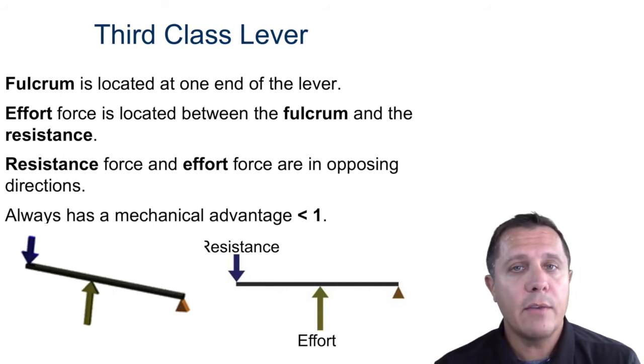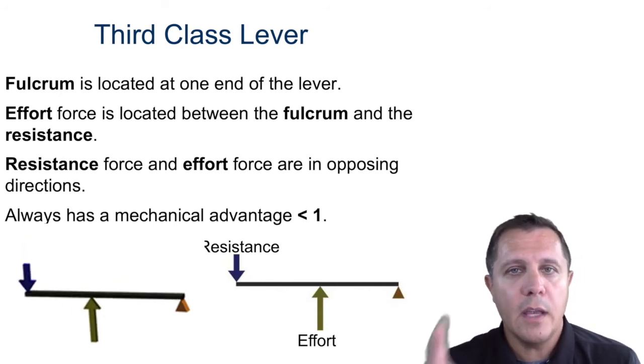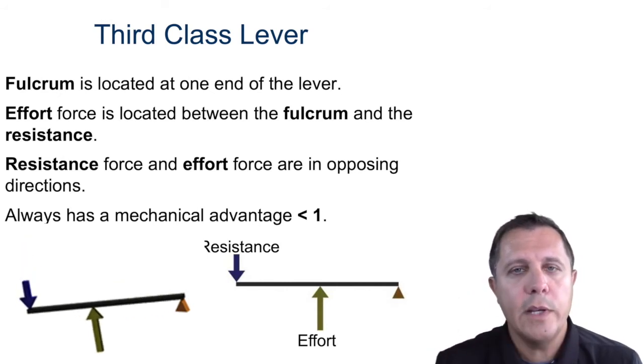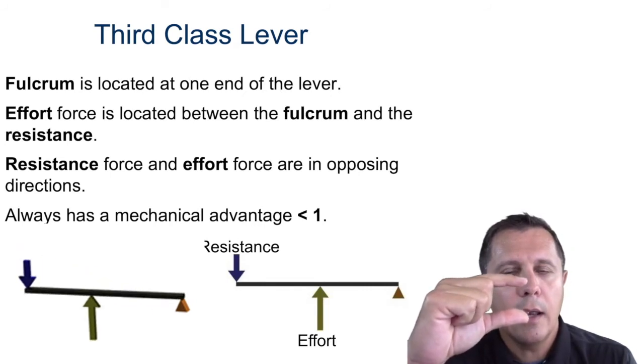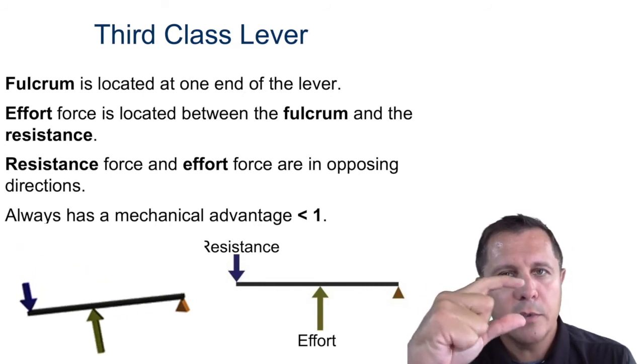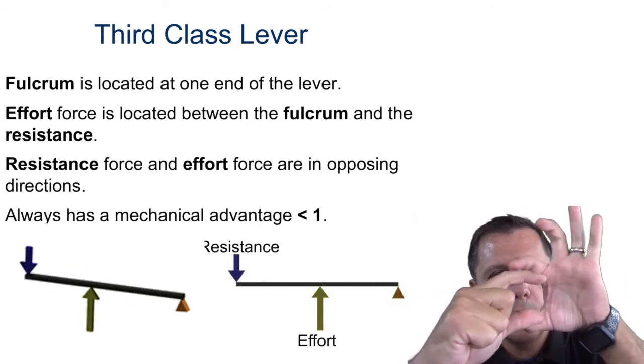A third class lever gives you better control over speed when you move things. That's why we use it for tweezers — because tweezers are really two third class levers.